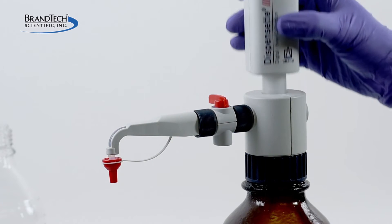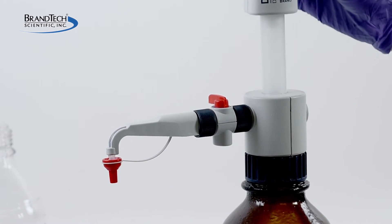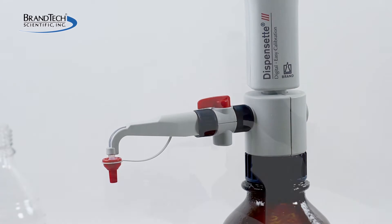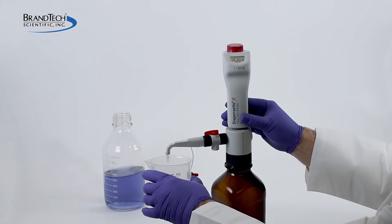If the instrument has a safety prime valve, turn to recirculate to flush remaining reagent from the dispenser. Then turn the valve to dispense and purge the remaining reagent from the discharge tube into a container.